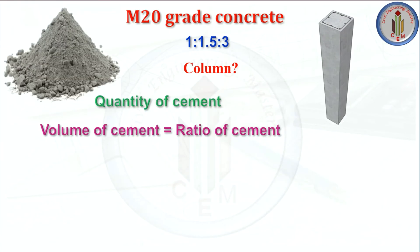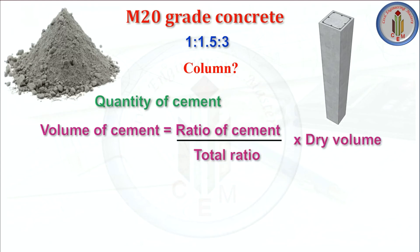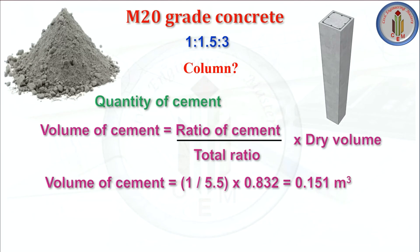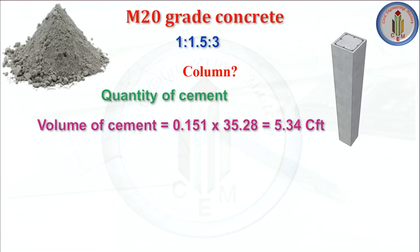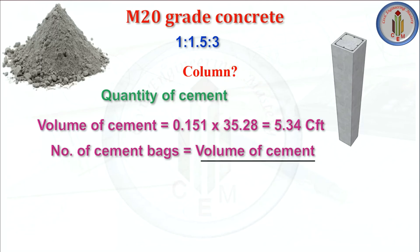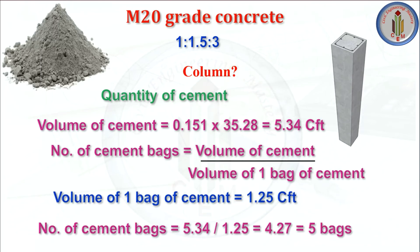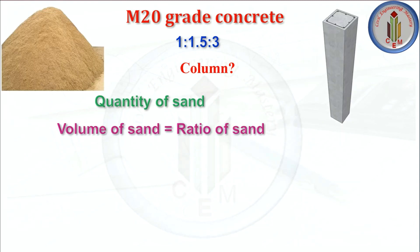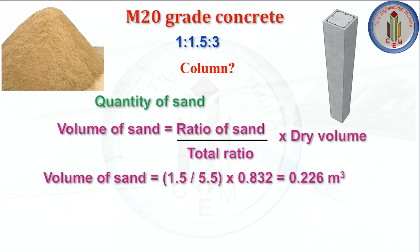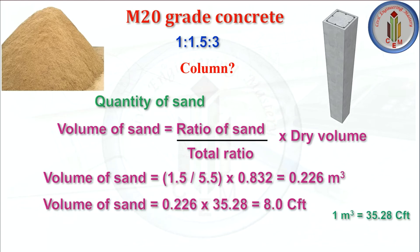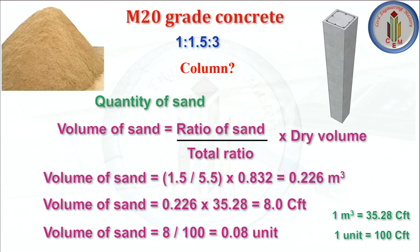First, let us calculate cement for the column. Volume of cement equals ratio of cement by total ratio multiplied by dry volume — applying this we get 0.151 meter cube, which converts to 5.34 CFT. Number of cement bags equals 5.34 divided by 1.25, giving 5 bags. For sand, volume equals ratio of sand divided by total ratio multiplied by dry volume — giving 0.226 meter cube, which is 8 CFT, converting to 0.08 unit.